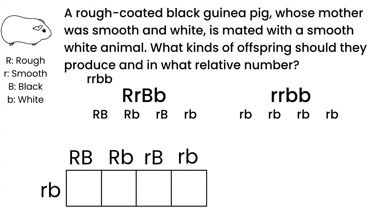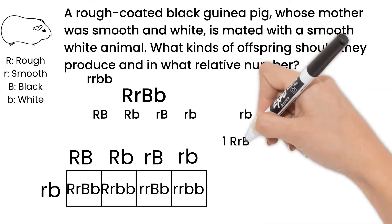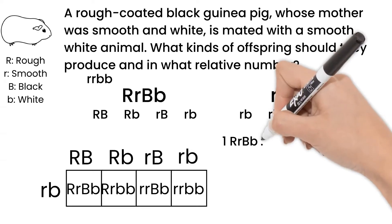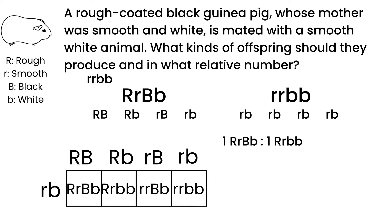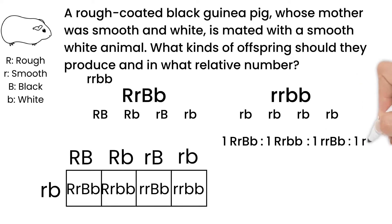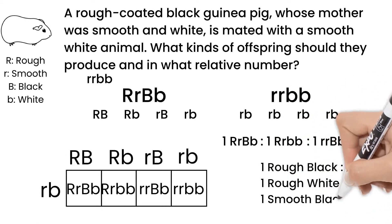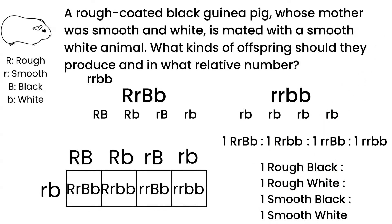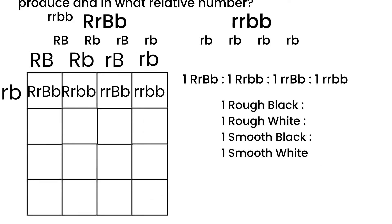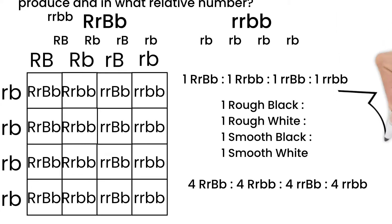Let's plug them in to our Punnett square and we get: one heterozygous R and B, one heterozygous R homozygous recessive B, one homozygous recessive R heterozygous B, and one homozygous recessive for both R and B. The phenotypes then are one rough black, one rough white, one smooth black, and one smooth white. If you did all four gametes of the mate instead of just one, you would have gotten a ratio of four to four to four to four of each, which simplifies to the same result.